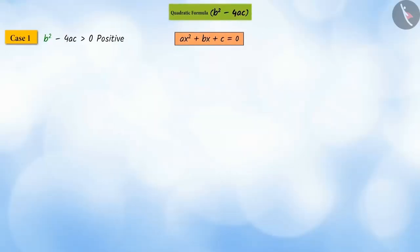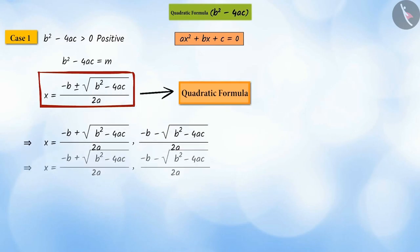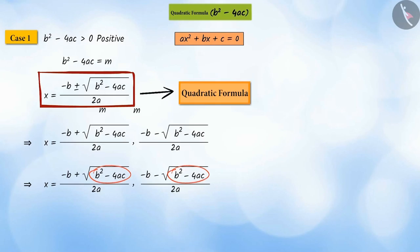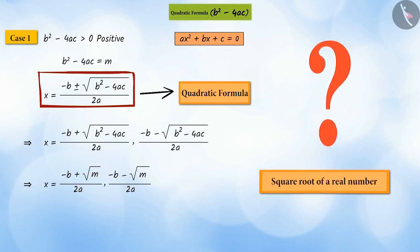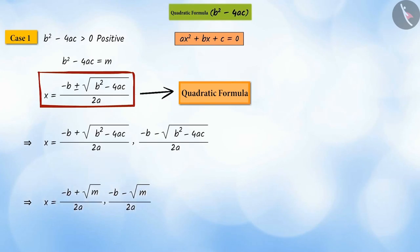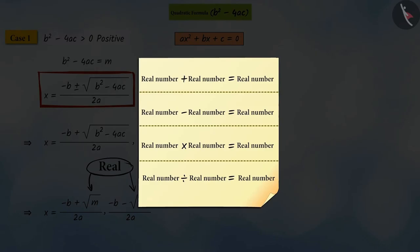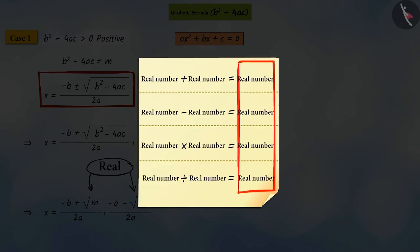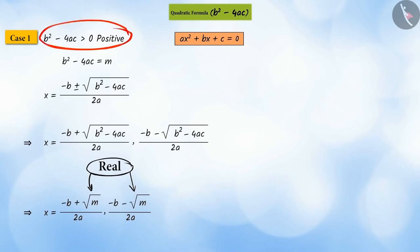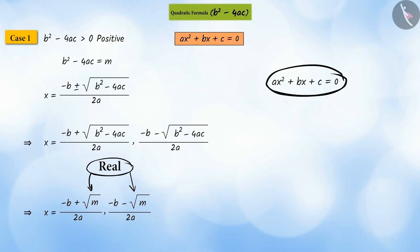In this quadratic formula, if the value of b² - 4ac is greater than zero, it is a positive number. Let's consider it m. Now in roots derived from the quadratic formula, let b² - 4ac be replaced with m. The square root of a real number will be a real number, and adding, subtracting, multiplying, or dividing any real number with a real number always gives a real number. So, with b² - 4ac being greater than zero, that is being positive, the quadratic equation will have two unequal real roots.